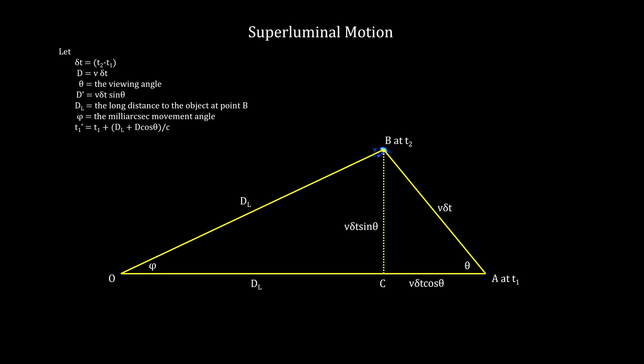Our start time is the object's start time, plus the time it takes the light to get from point A to point O, where we are. Our end time is the object's end time, plus the time it takes the light to get from point B to point O.